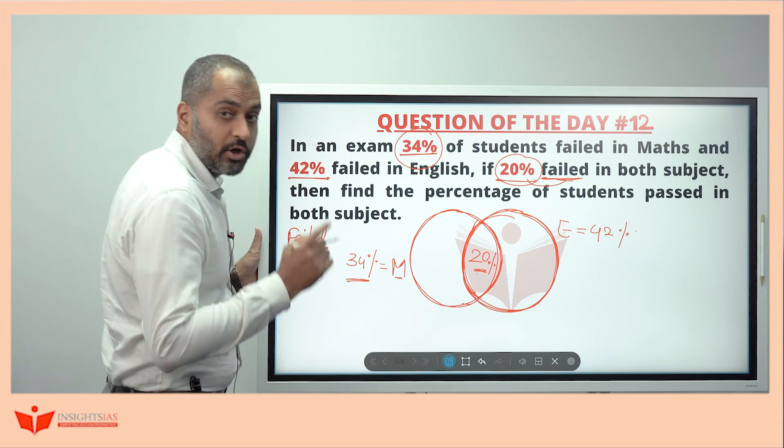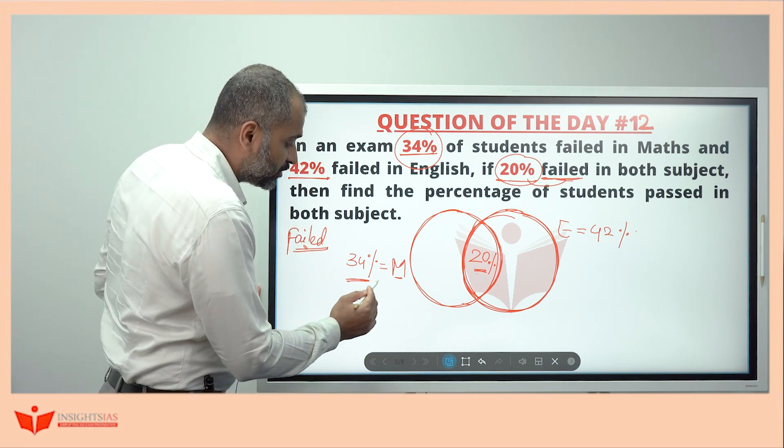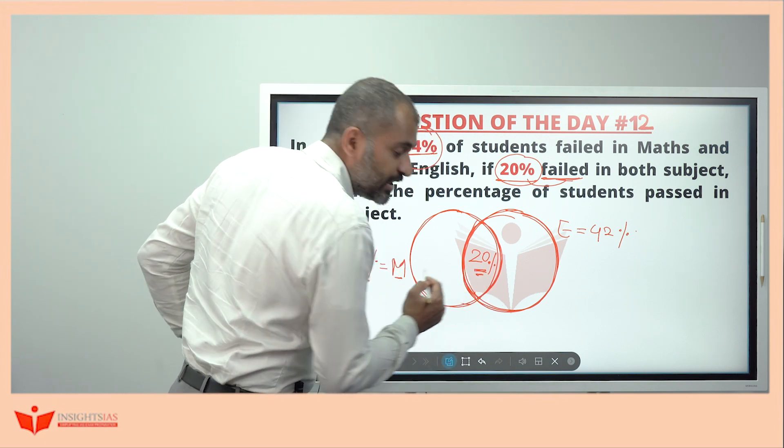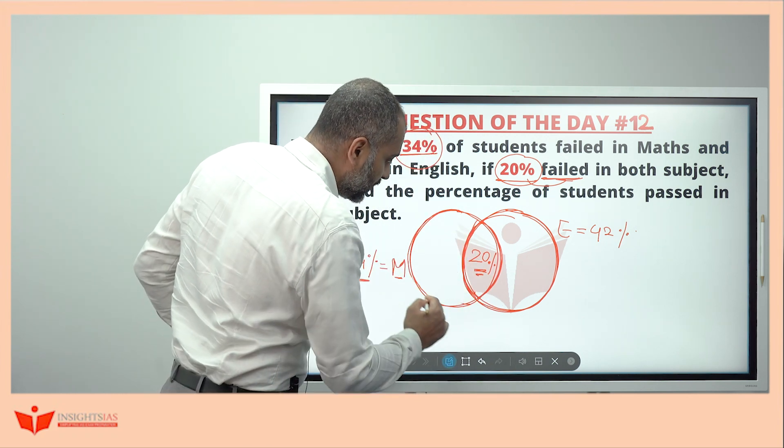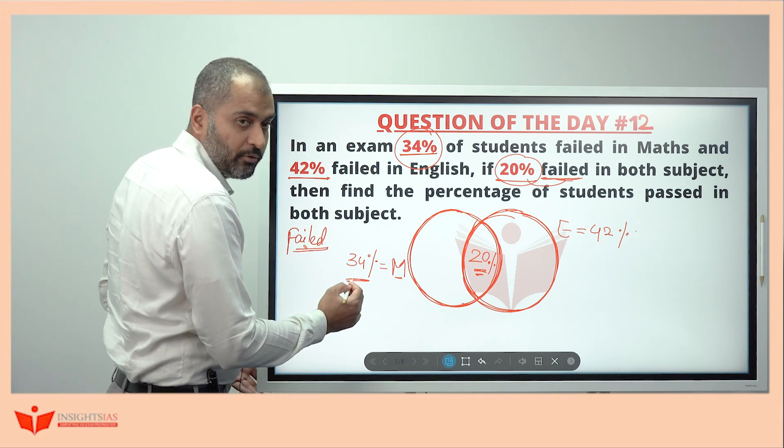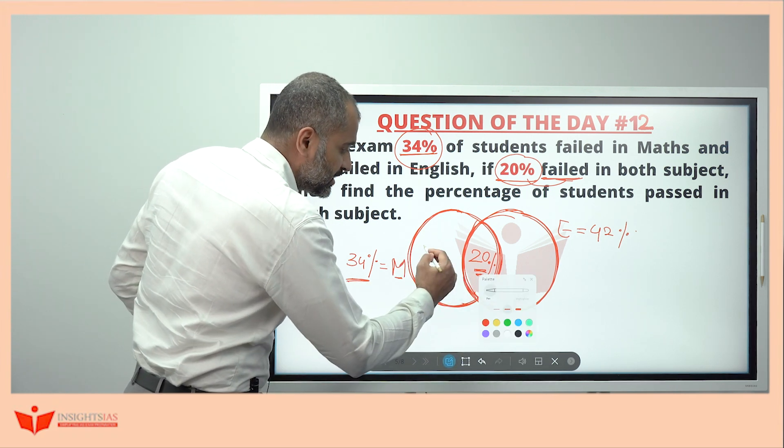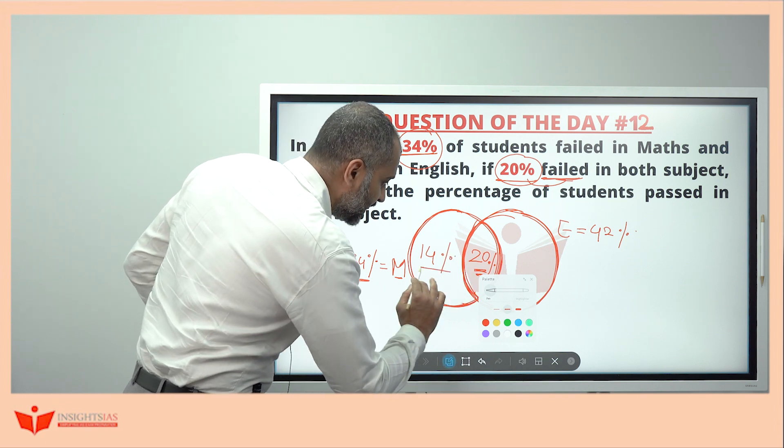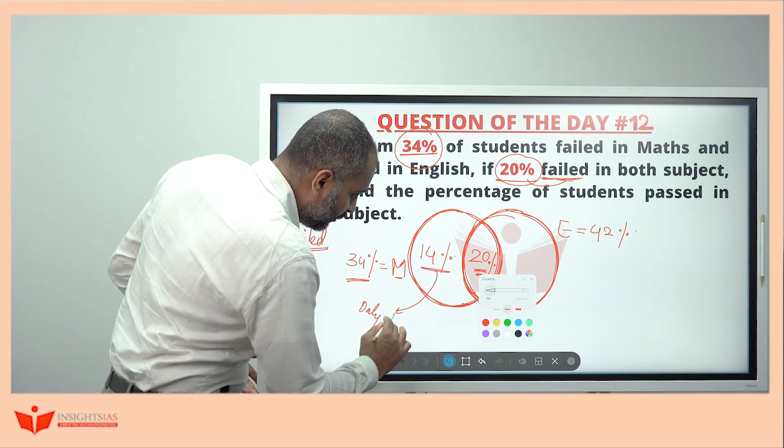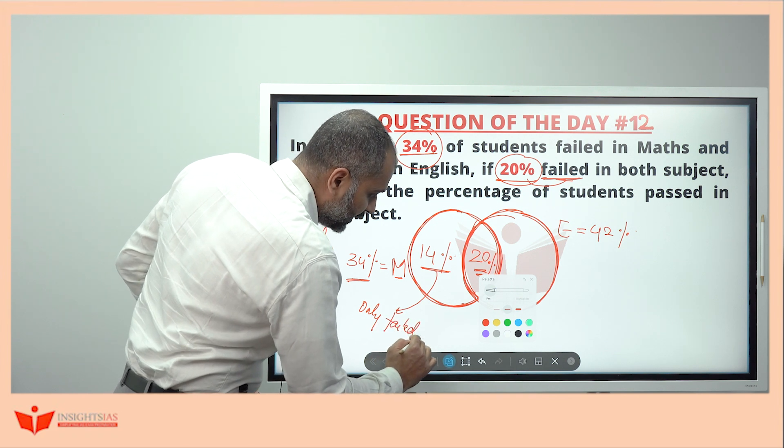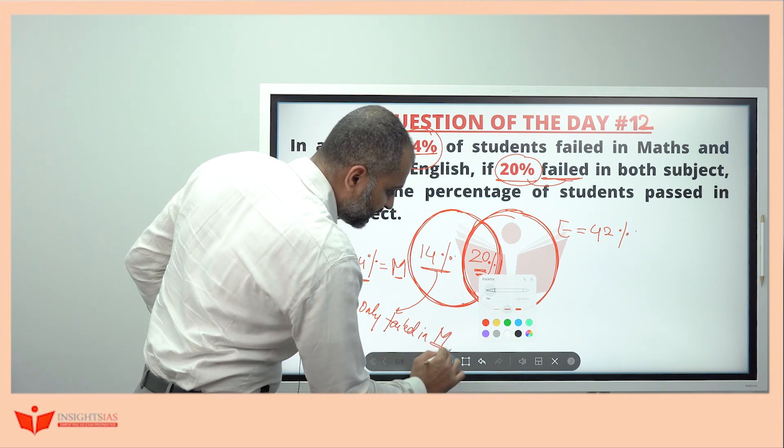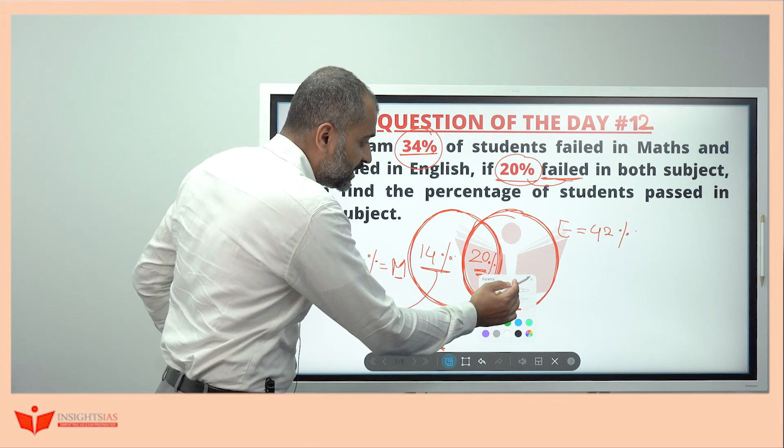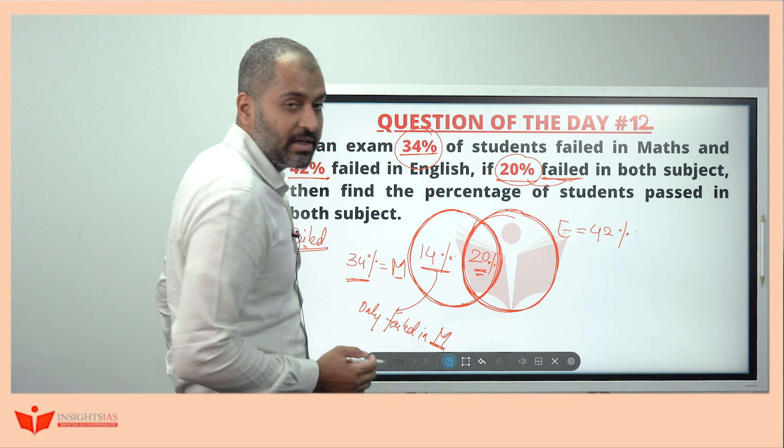Maths 34%, total Maths failed is 34% in which 20% is already filled. This whole circle should represent 34%. Already we have 20% means here it should be 14%. This 14% represents what? Only failed in Maths. This 14% is failed only in Maths, and this 20% is failed in both Maths as well as English.